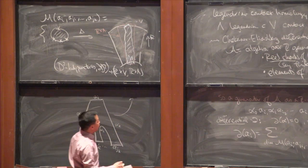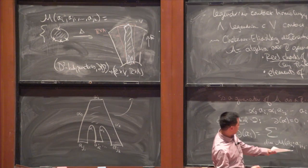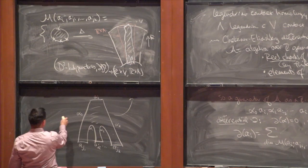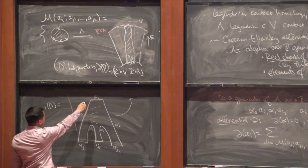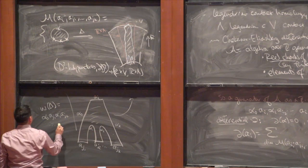There's an ℝ-action on this moduli space — the whole picture is invariant under translation in the vertical direction. A rigid holomorphic disk is one where the only freedom is to perturb it up and down in the ℝ direction. The word associated to this disk is what you read off going around the boundary: α₀, A_{j₁}, α₁, A_{j₂}, and so on through αₖ. You have to choose capping paths joining the endpoints of Reeb chords so they become closed elements of H₁.